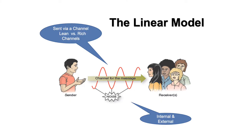Our first model is the linear model. It is comprised of a person who would like to send a message to one or more people, or call them receivers. And you choose how you're going to send your message. That's called the channel. You already know this.